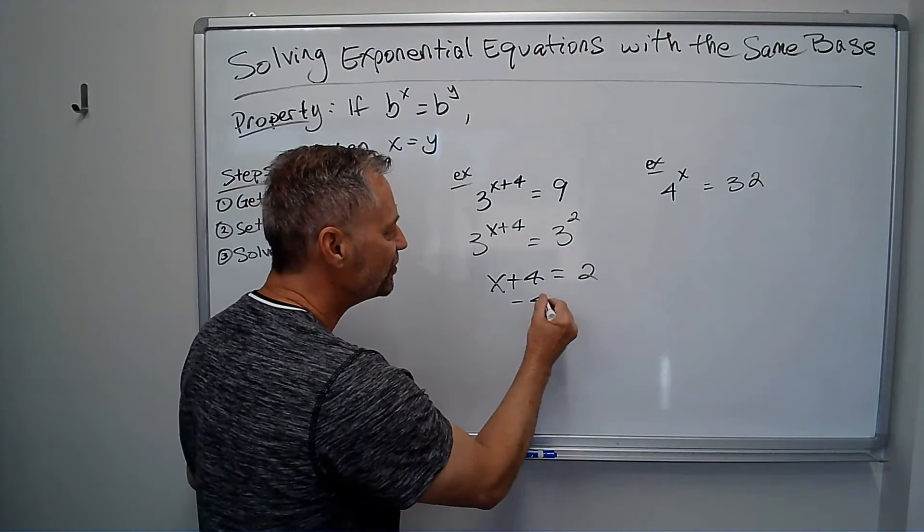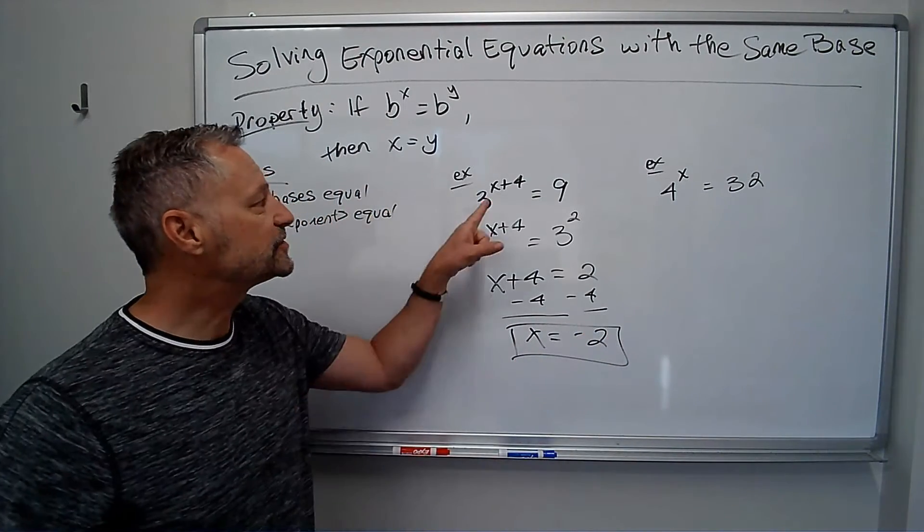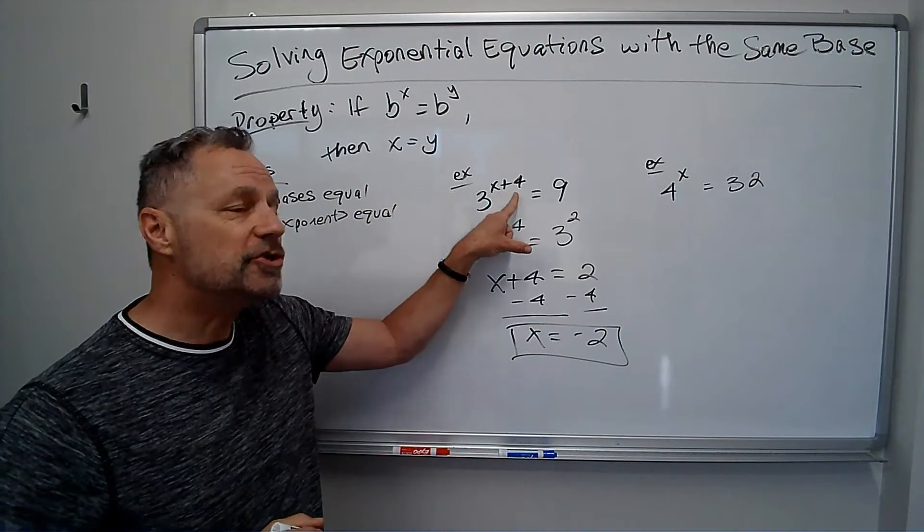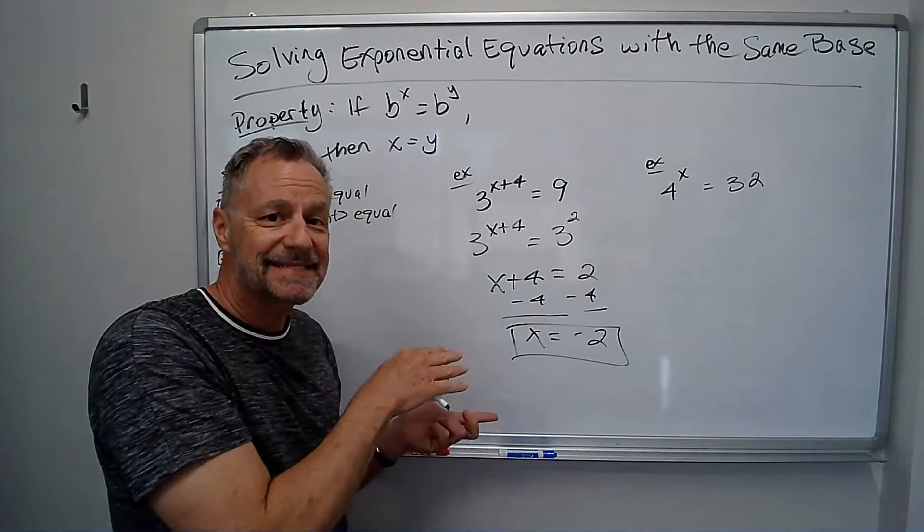And now I can just solve this, and that's my answer. And notice if I plug that in, negative 2 plus 4 is 2, 3 to the 2 is 9, it does check. So that's the idea.